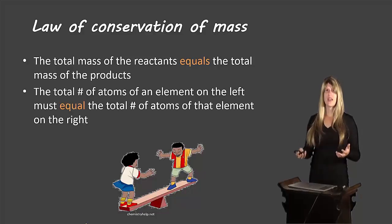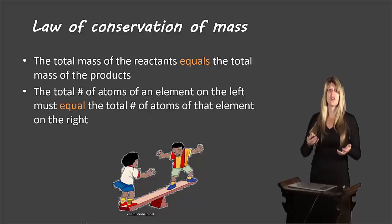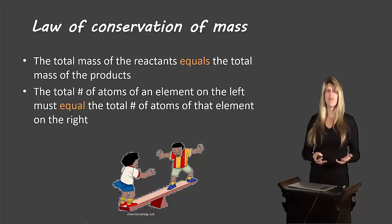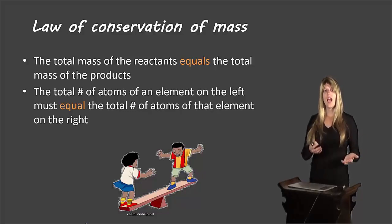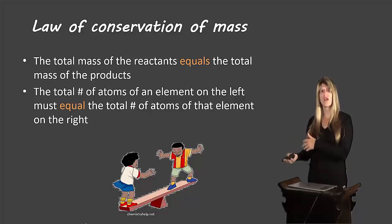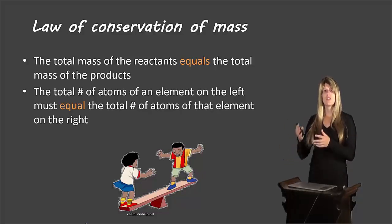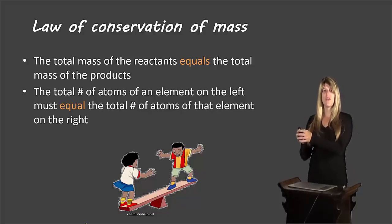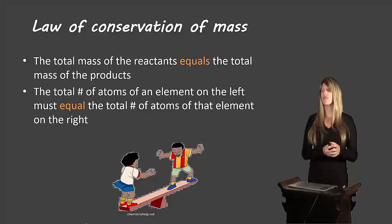Now how does that affect us when we're dealing with chemical reactions and when we have to do what we call balancing? It means that the total number of atoms of one type of element on the left side of the equation has to equal the total number of atoms of that same element on the right side. We have to go through each of the different elements and check that the number of atoms on the left equals the number of atoms on the right.